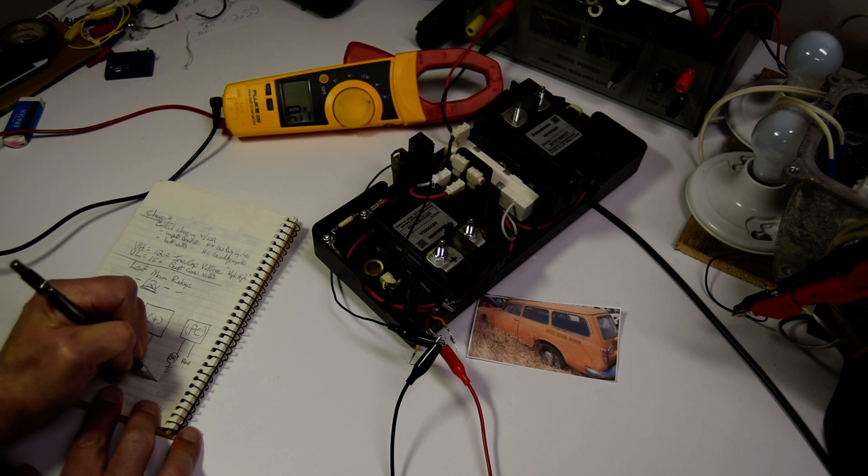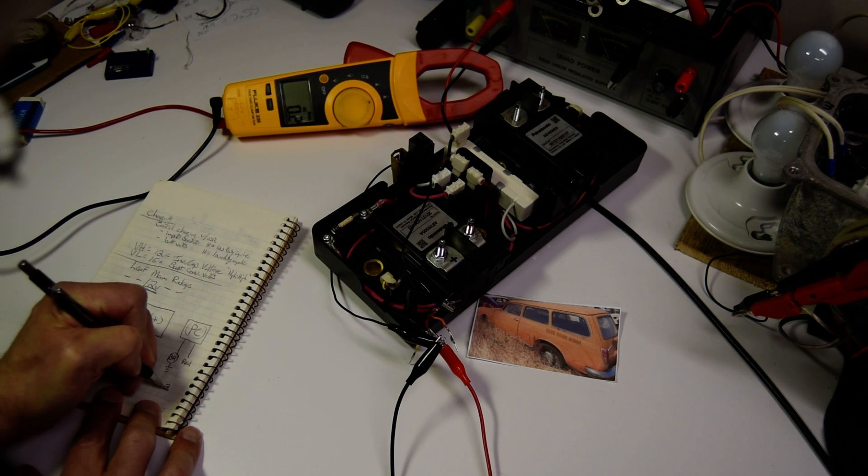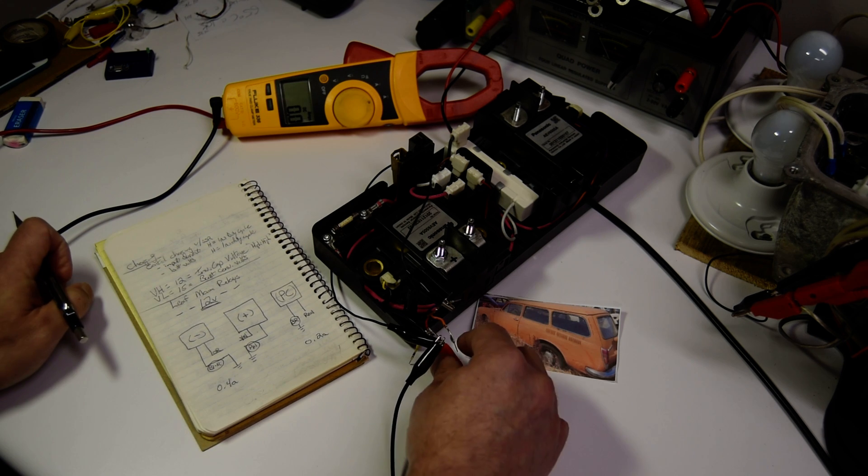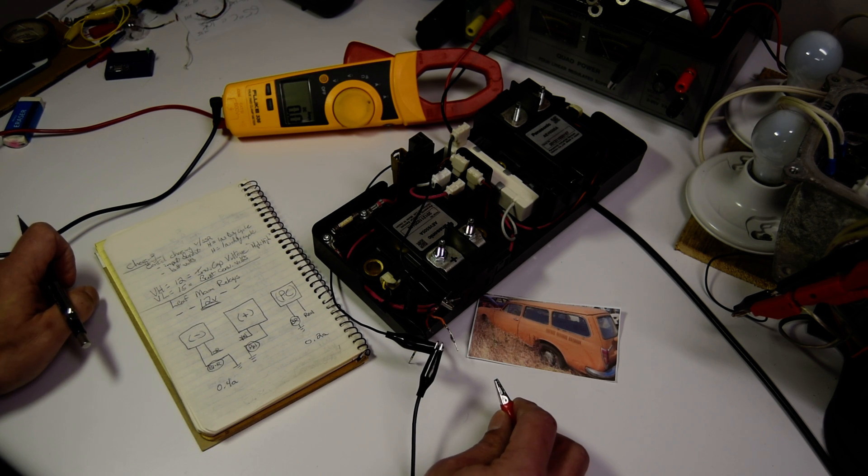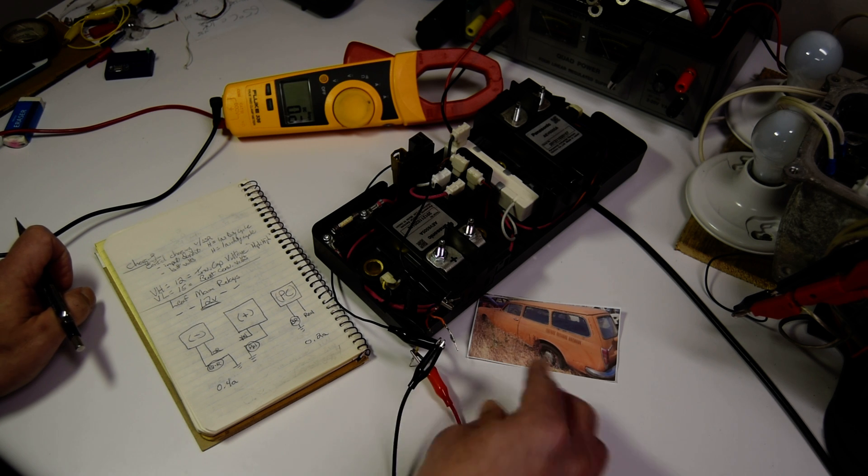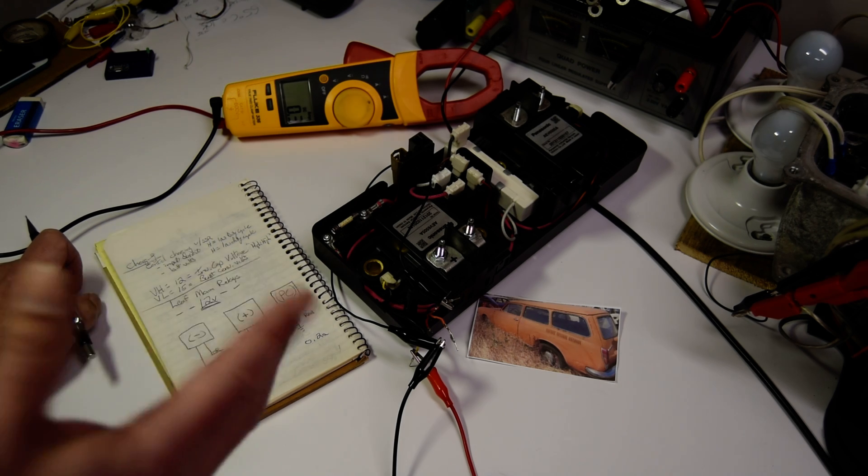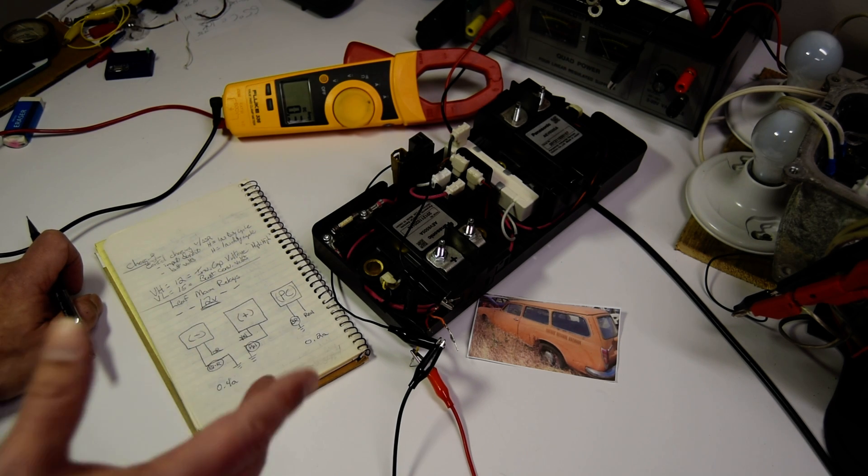And the last one to do is the yellow one which is hiding down here. We'll clip that one on. Let that stabilize. Looks like three point, three point four, point four. Okay, it reads the highest at point four.